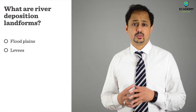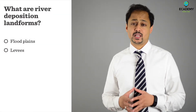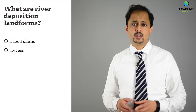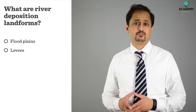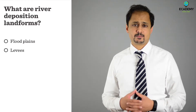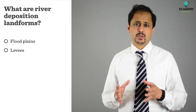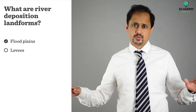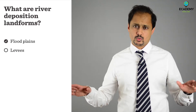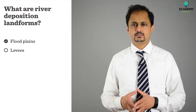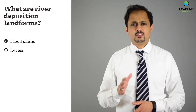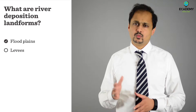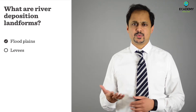What are river deposition landforms? First of all, floodplains. A floodplain is a wide flat area of land either side of a river in its lower course. The floodplain is both formed by erosion and deposition.